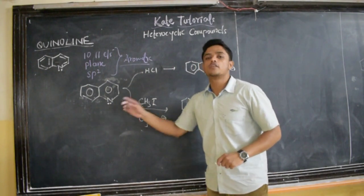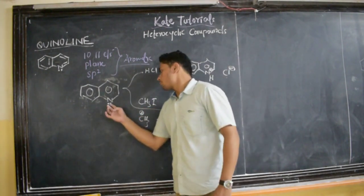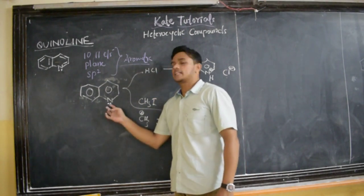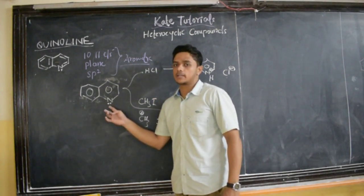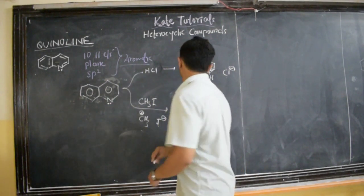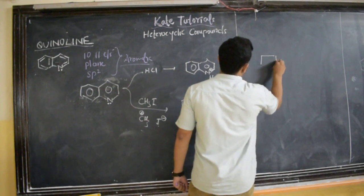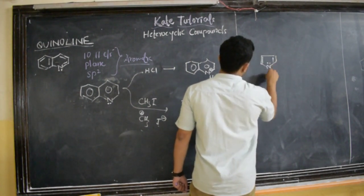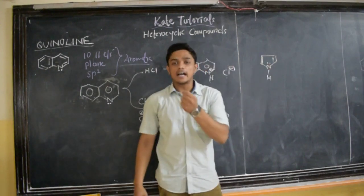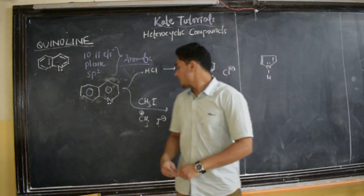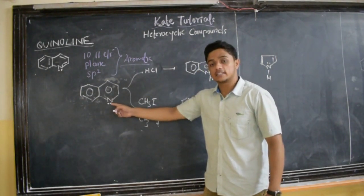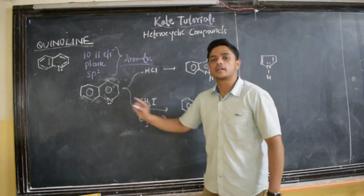The question will be: the lone pair of electrons of nitrogen — in which orbital is it present? It is present in an sp2-hybridized orbital. These are not present in an unhybridized p-orbital. Whereas, in pyrrole, the lone pair of electrons on nitrogen is present in an unhybridized p-orbital. So the lone pair of electrons in quinoline is present in a hybridized, that is sp2-hybridized, orbital of nitrogen. This is the key difference.